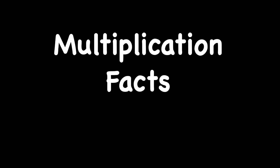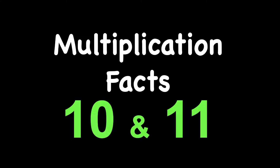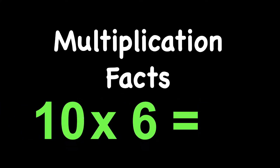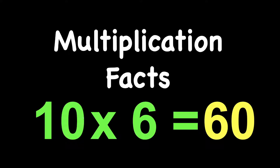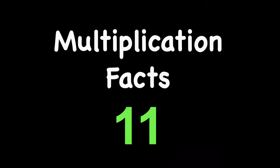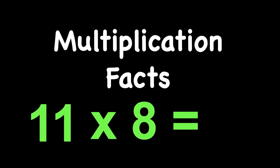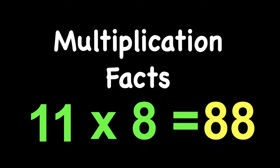Hey kids, today we will practice multiplication facts for 10 and 11. And 10s and 11s are really easy. So for example, 10 times 6 equals 60, and all we had to do is add a 0 to the 6. Or let's try 11: 11 times 8 is 88, and all we had to do there is double the 8 for 88.